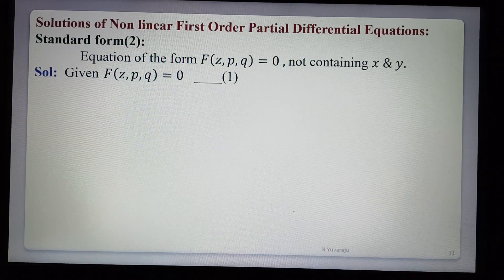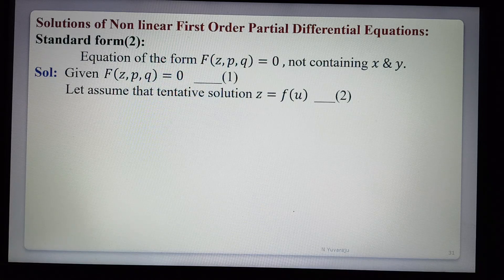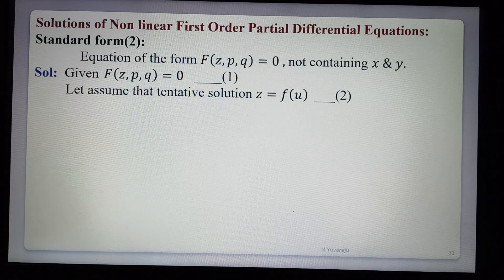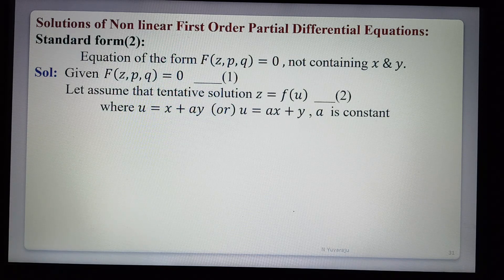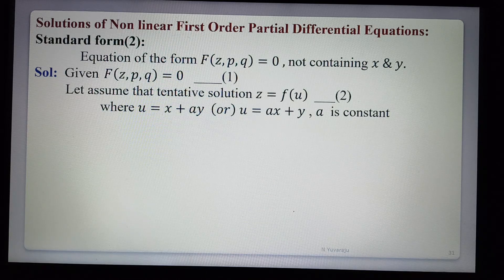Given f(z, p, q) = 0, we assume a tentative solution: z is a function of u, where u = x + ay or u = ax + y, and a is a constant. Using this tentative solution we find the complete general solution of the given Standard Form 2 equation.